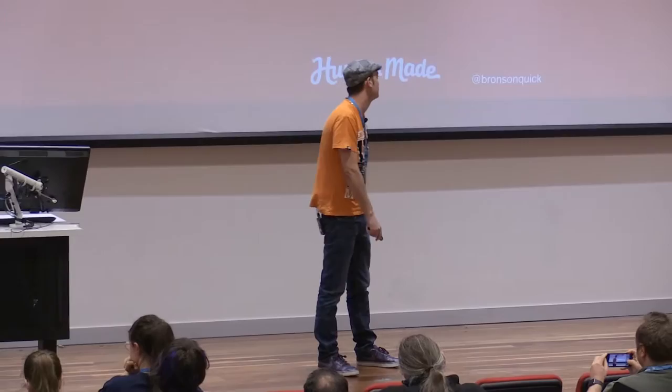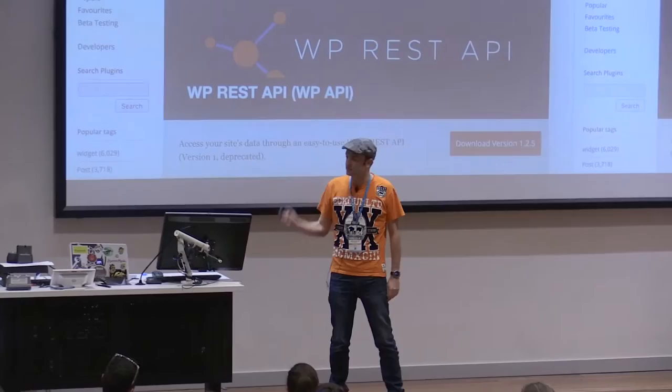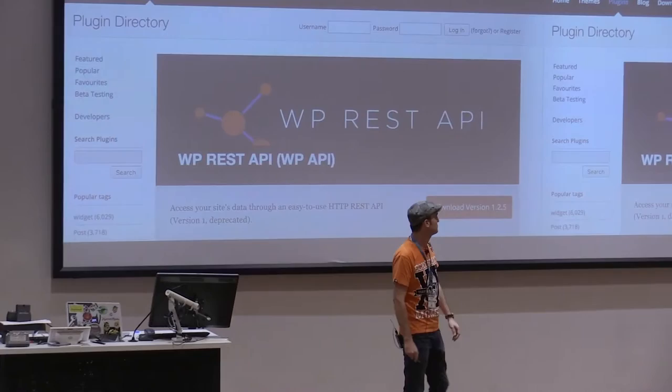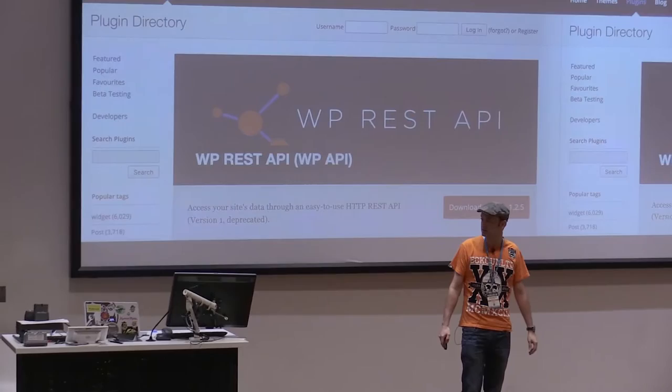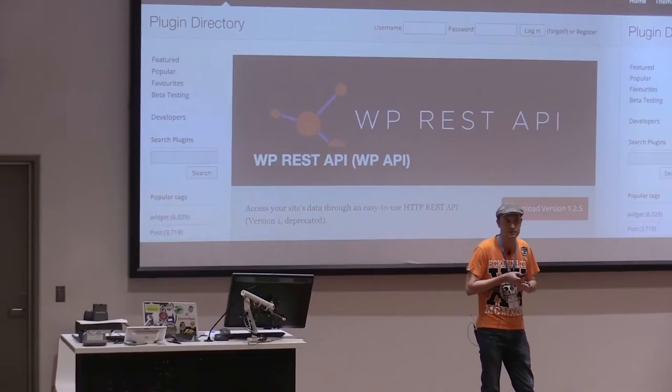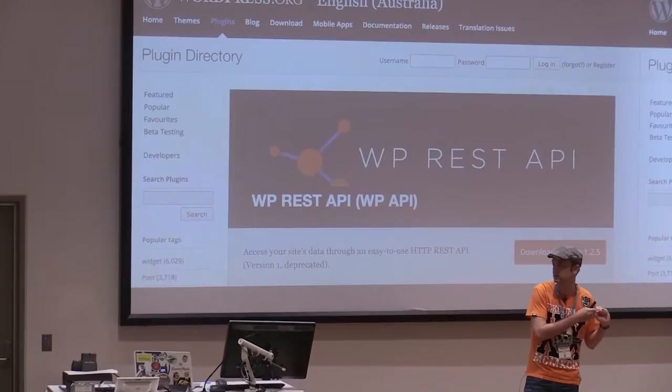After that, you can write your front end or app in whatever language of choice you like. You can download the REST API plugin from wordpress.org and install it. Version one is deprecated; version two is the latest. You can also contribute to that project. There are four lead developers: Ryan McHugh, Rachel Baker, Joe Hoyle, and Daniel Berkuba. They've been doing an amazing amount of work on this.